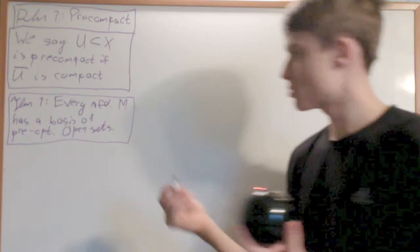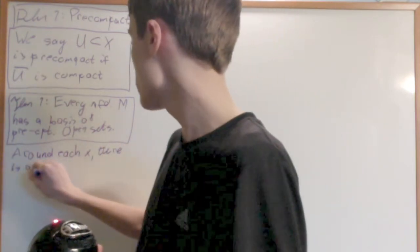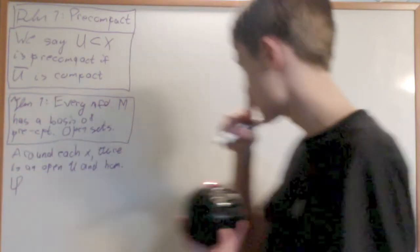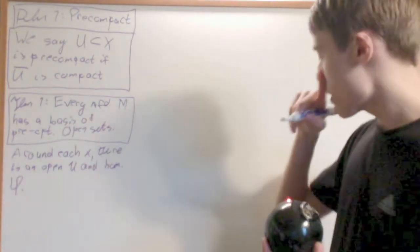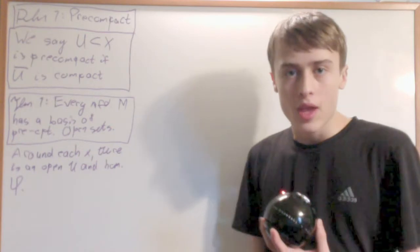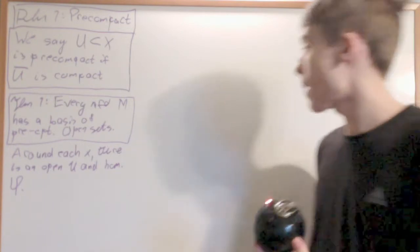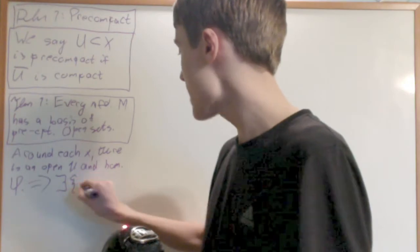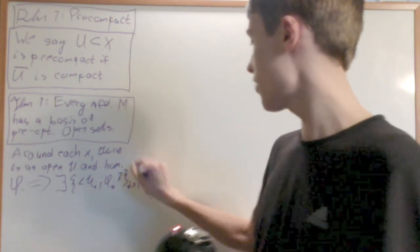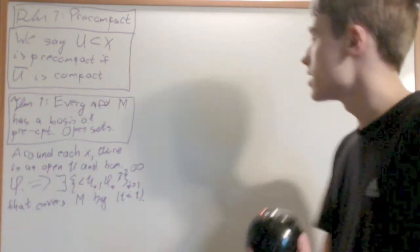So how we do this is we look at the chart maps, right? So around each X, there is an open U and map and homeomorphism, a phi, that brings you from U down to U hat, but I'm not going to worry about that because U, the set of all those U's for each of those X's create an open cover of M. But what you have to remember is that M is second countable, it has a countable basis. And so using properties of that, that implies that there exists a countable amount of these charts. So U_I, phi_I, from I equals one to infinity, that covers M. By the third condition that it has a countable basis.